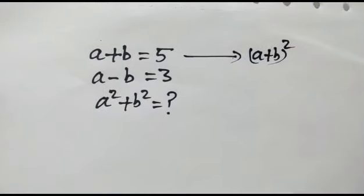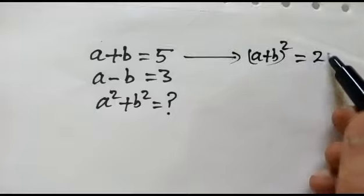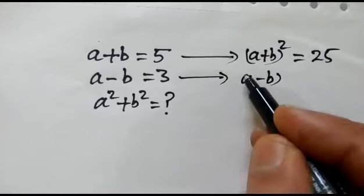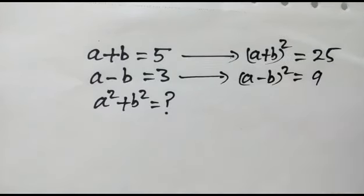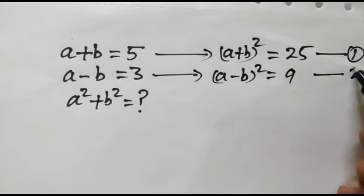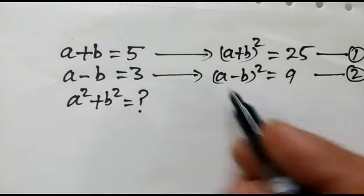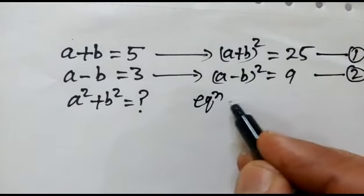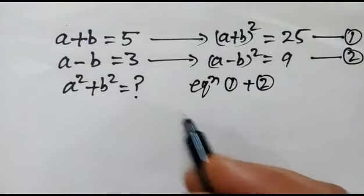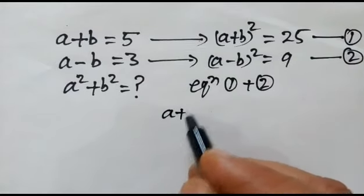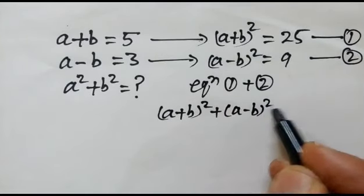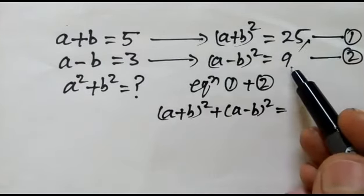So this can be written as (a + b)² = 25, and (a - b)² = 9. We say this is equation number one and this is equation number two. Now if we add equation one and equation two, we get (a + b)² + (a - b)² = 25 + 9 = 34.